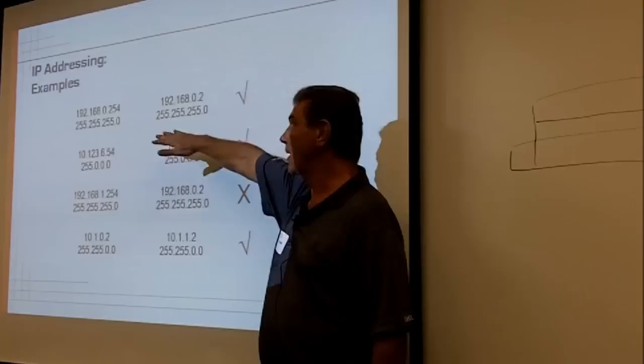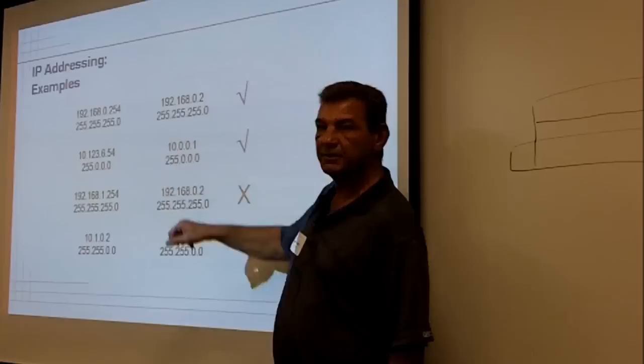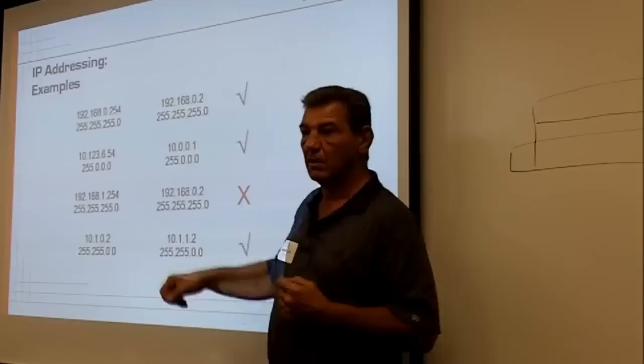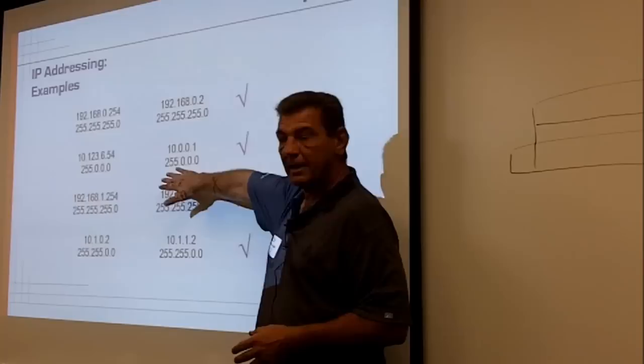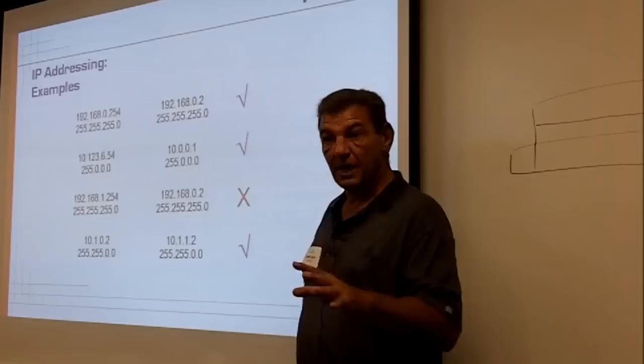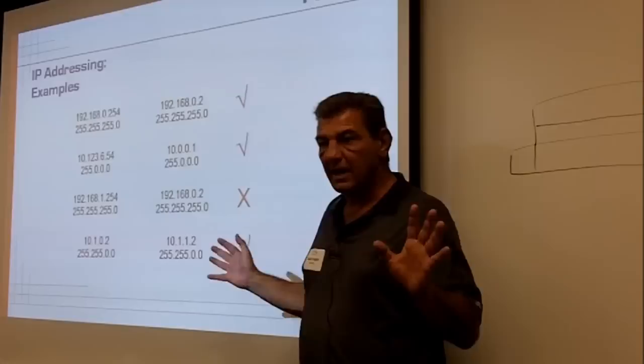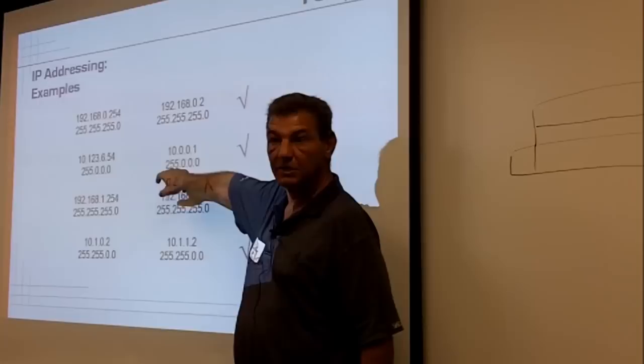255 defines our network, so in this case 255.255.255.0 is telling me the first three octets are my network — so 192.168.0 is my network, and anything that is 192.168.0 can talk to each other. The second example is telling me that just the first octet identifies my network, so anything 10.anything.anything.anything can talk to anything else with a 10.anything, as long as both subnet masks are 255.